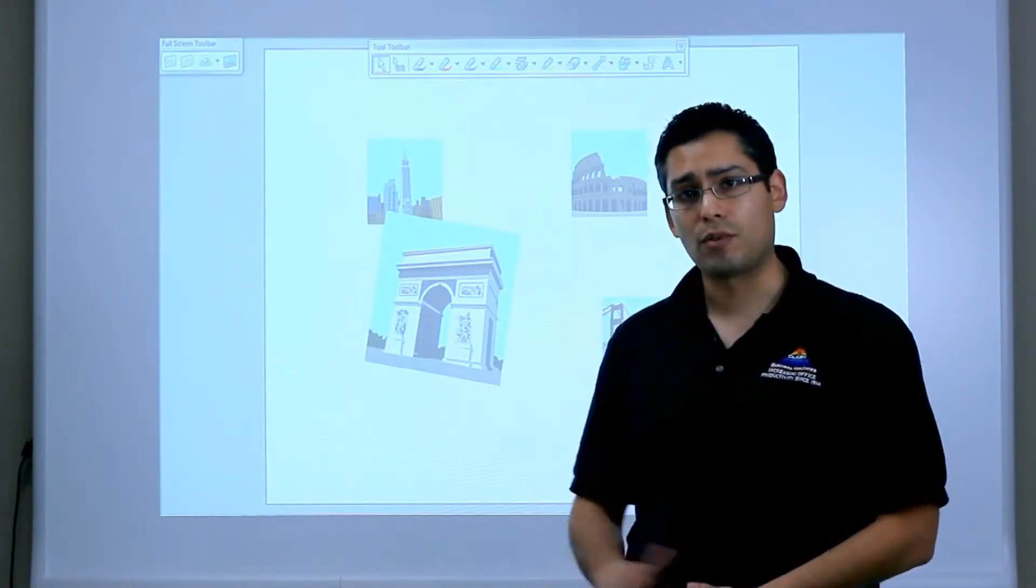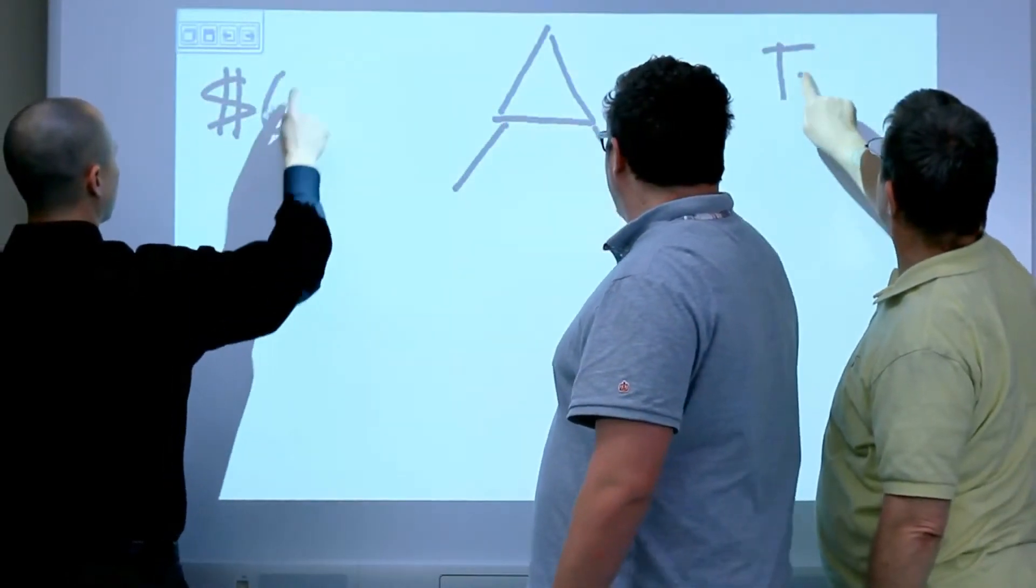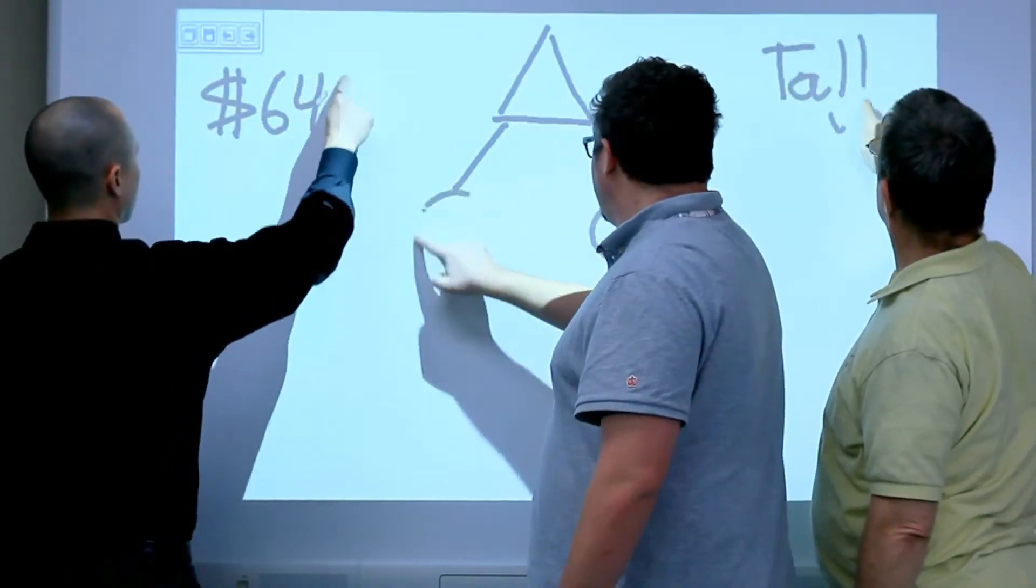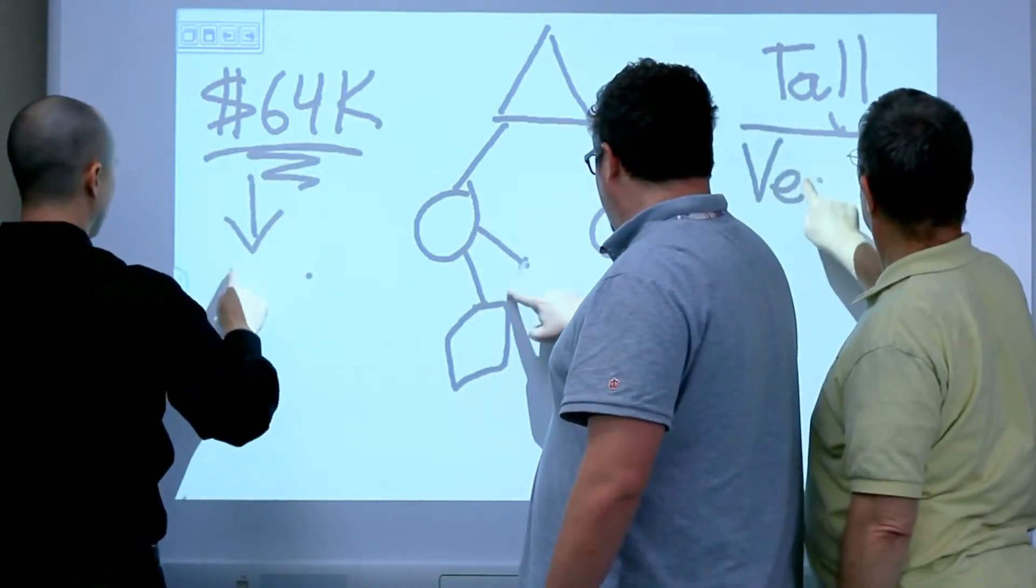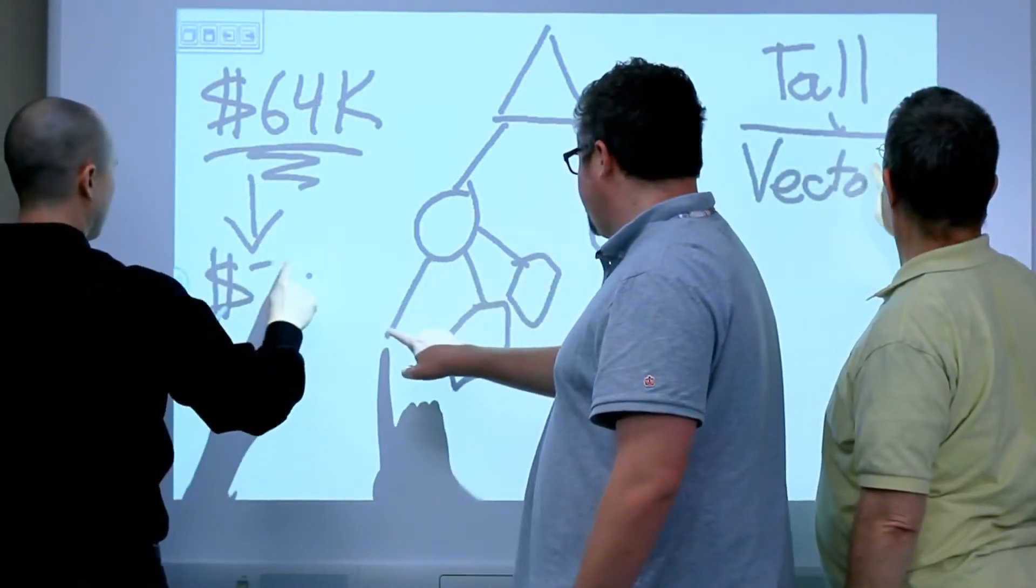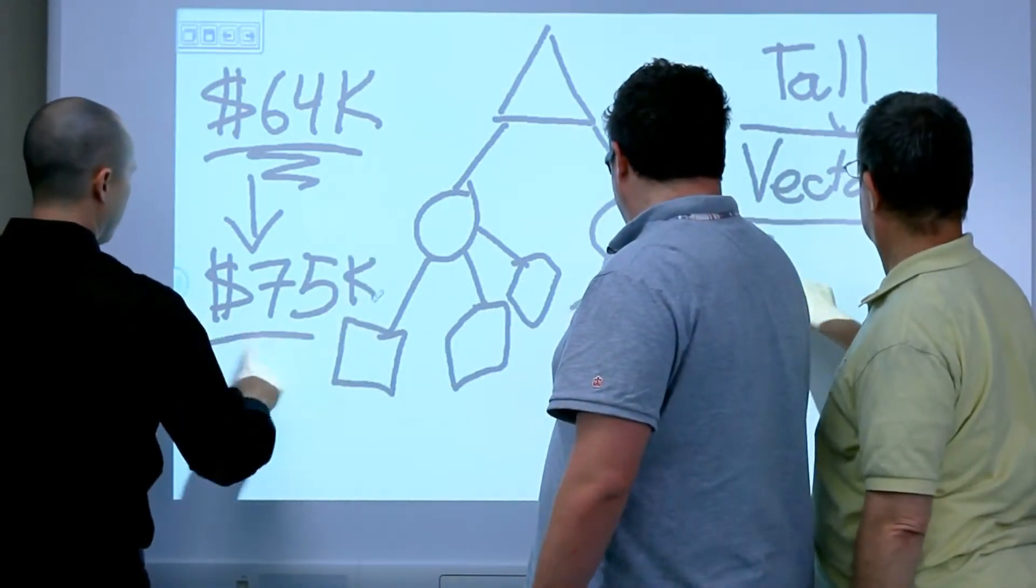With this particular board, the UBTA80, you can use up to three users. And what that means is three people could come up to the board and actually annotate at the same time without the board picking up any interference. Each of them could be writing on the board in different areas or even in the same proximity to each other.